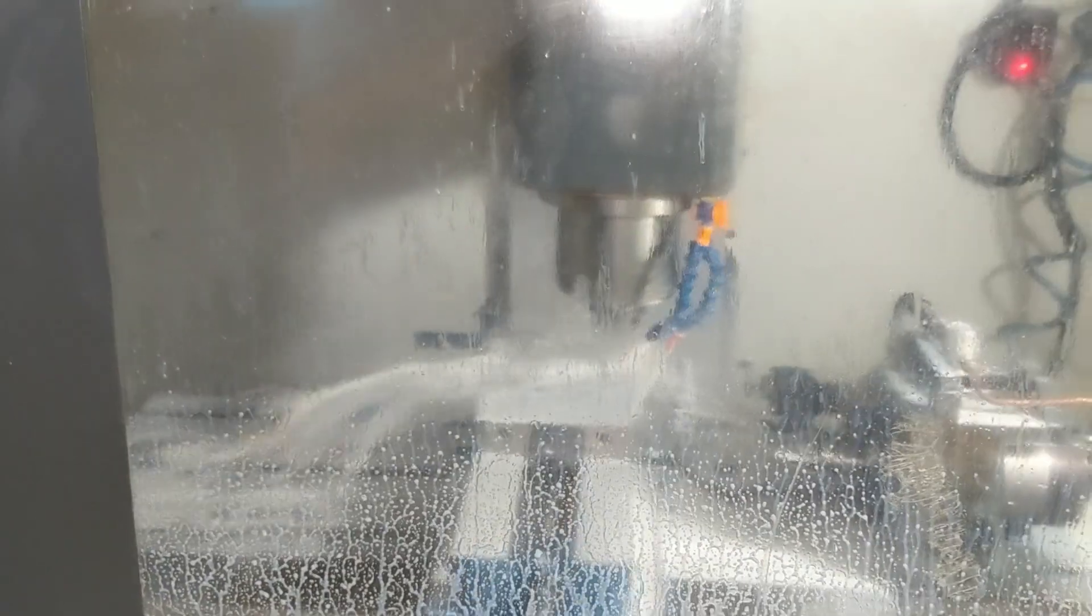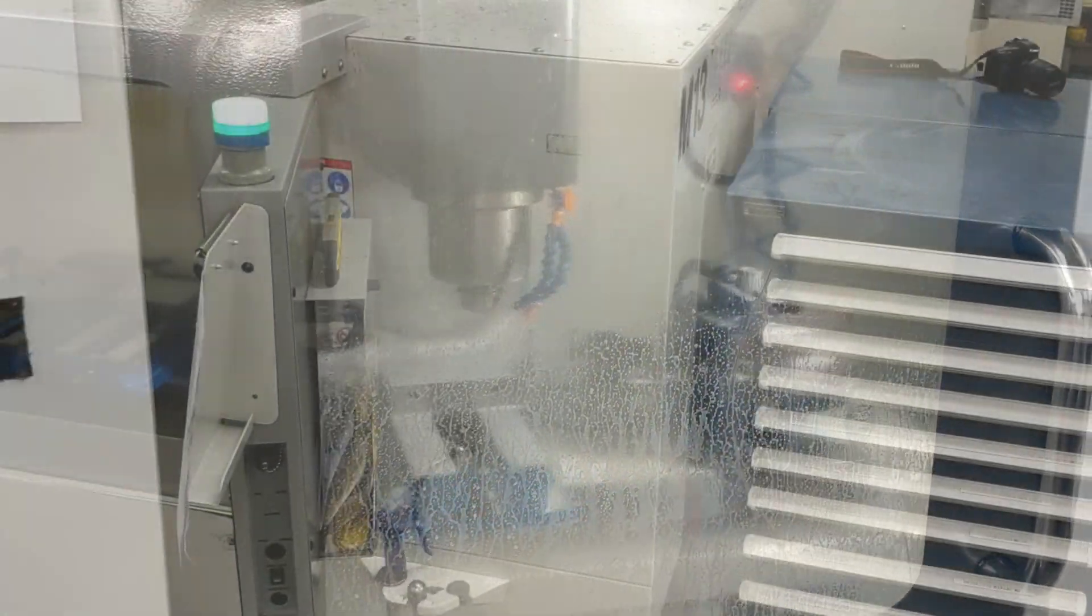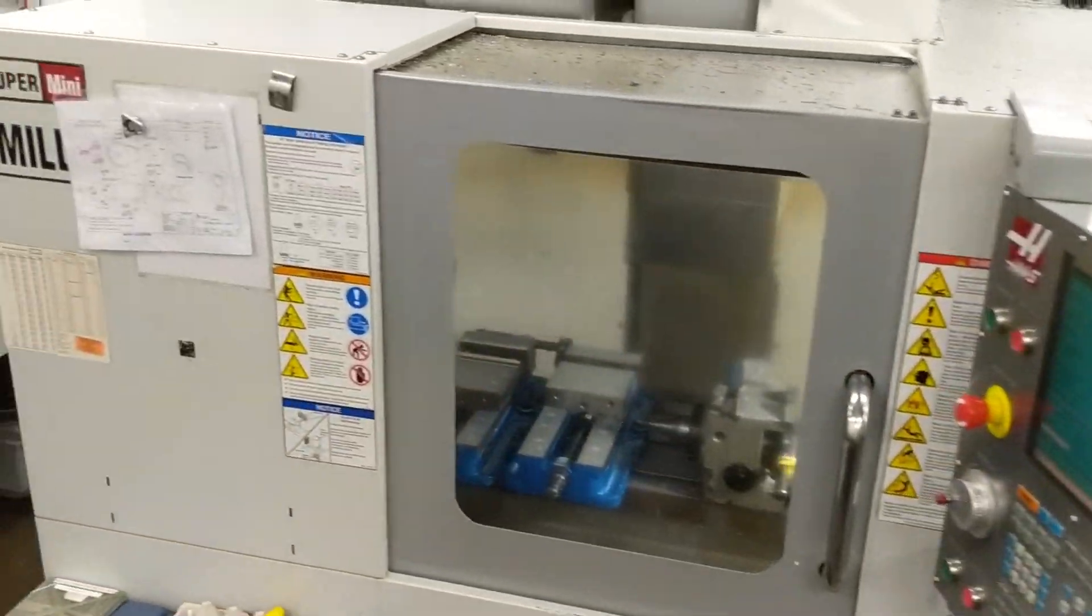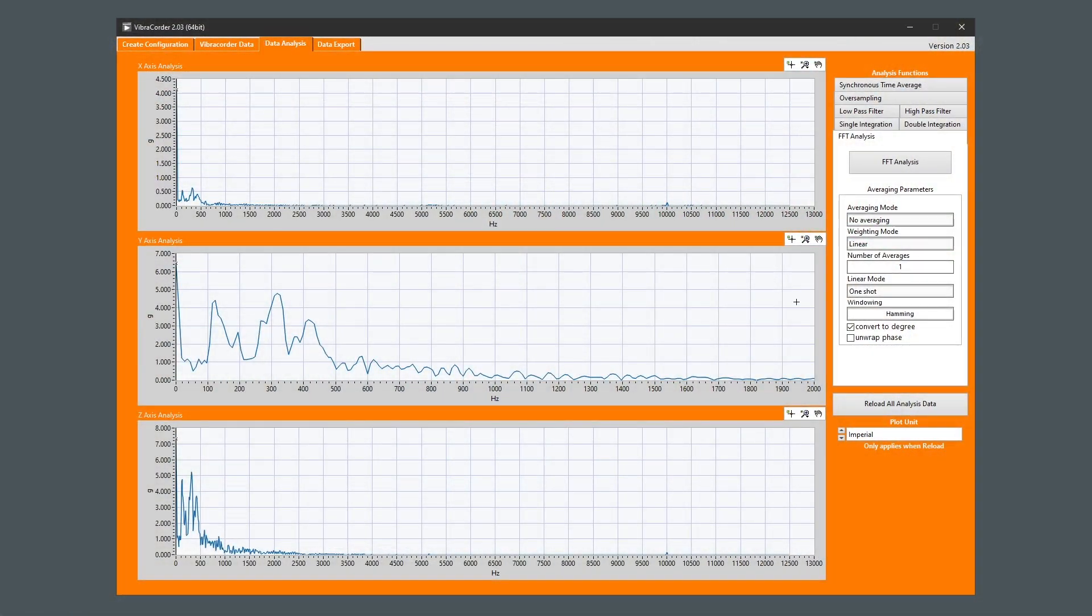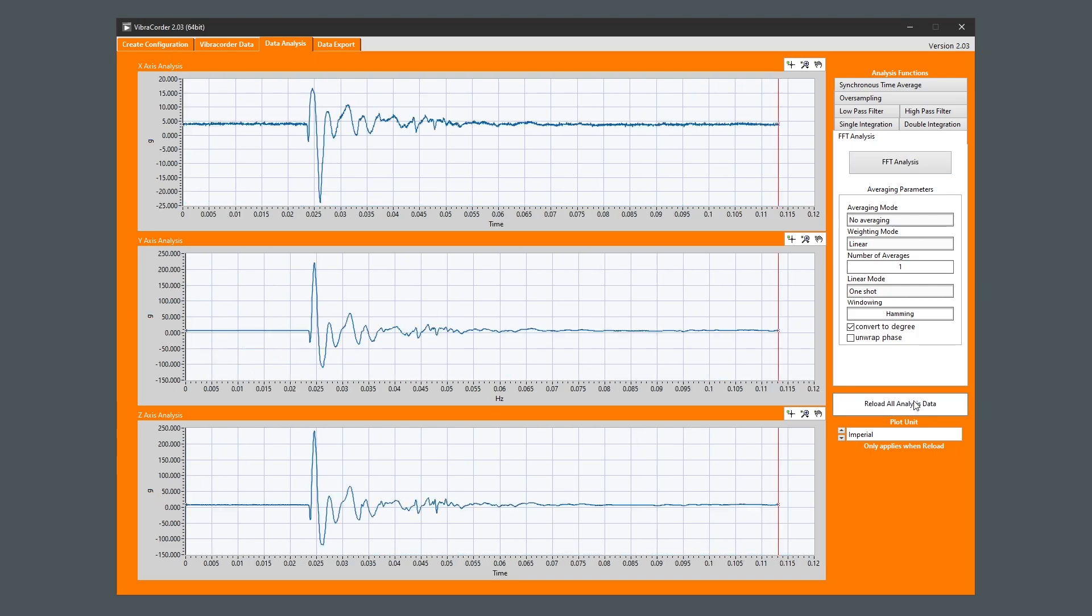To determine the spindle runtime for each CNC machine, we needed a means to autonomously obtain a clear indication between the on and off state of each machine. We decided to use vibration data as an indicator for when each CNC machine is in operation.